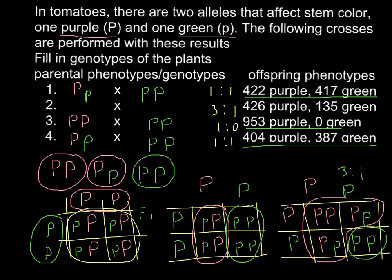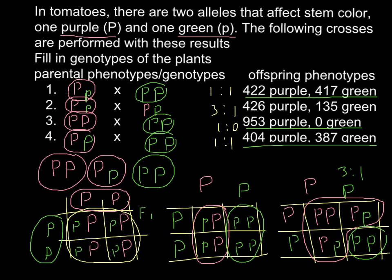This is the 3 to 1 ratio, which matches row number 2. So we put the parents' genotypes as capital P small p and capital P small p. All four phenotypes include purple stem plants with different genotypes, and one green stem plant. To summarize: except for number 2 where we cross two purple stem plants to get a 3 to 1 ratio, the other crosses use heterozygous purple with homozygous recessive to yield 1 to 1 ratios.